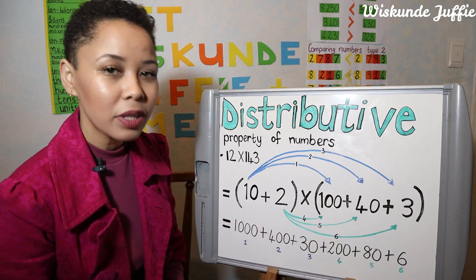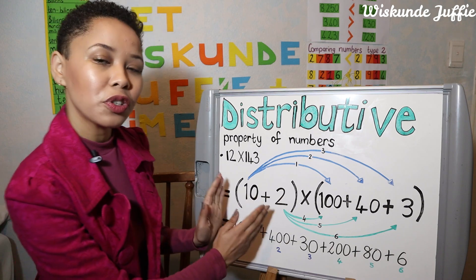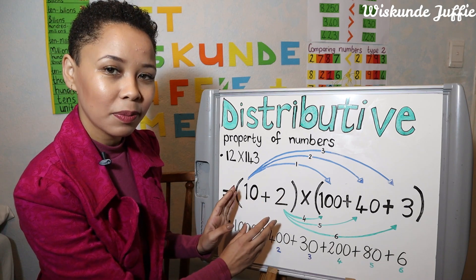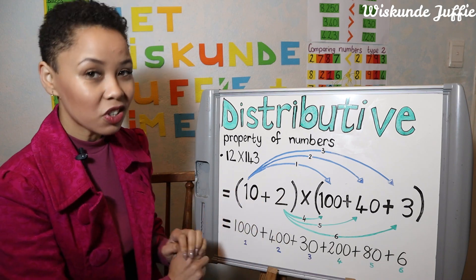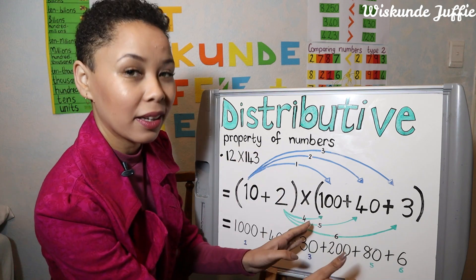What I will do now is multiply each number in the first bracket with each number in the second bracket.